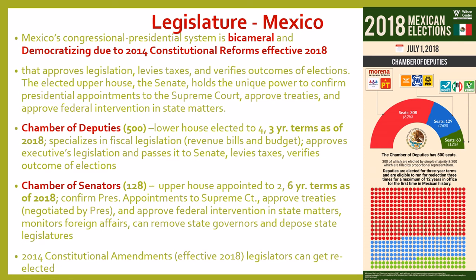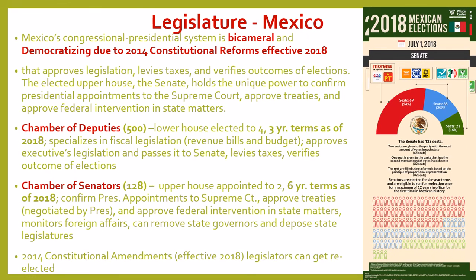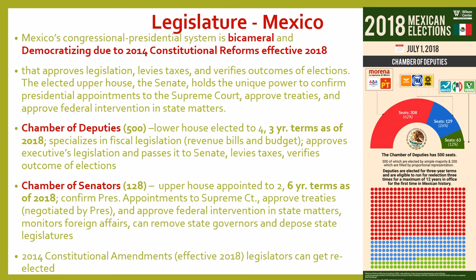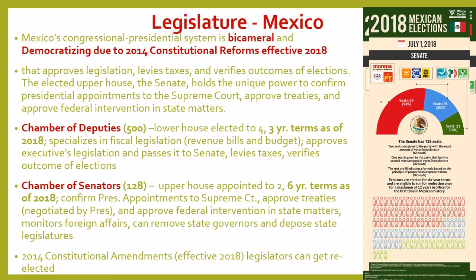This is very similar to the U.S. system — the Chamber of Deputies is like the House of Representatives and the Chamber of Senators is like the U.S. Senate. Because of the 2014 constitutional amendments, legislators can now get reelected. Remember, the no-reelection rule now only applies to the president. As of 2018, legislators can get reelected — in the Chamber of Deputies up to four consecutive three-year terms, and in the Senate up to two consecutive six-year terms.